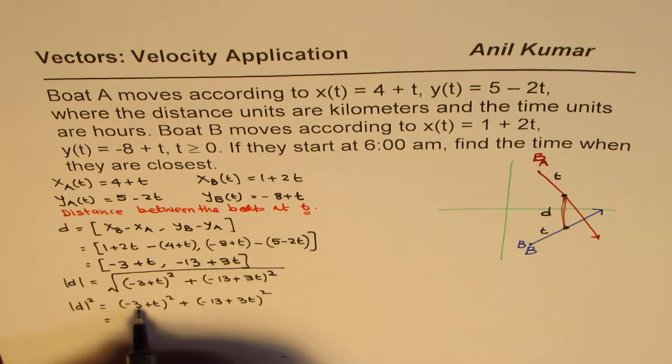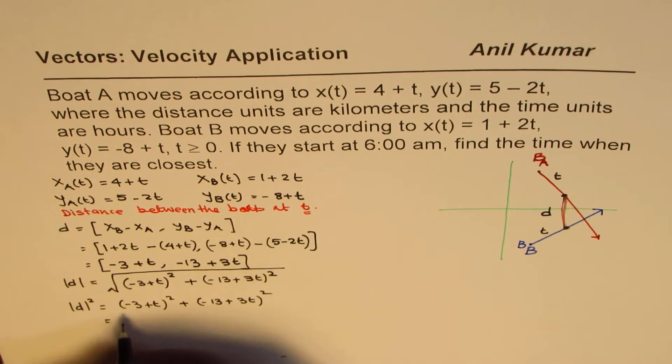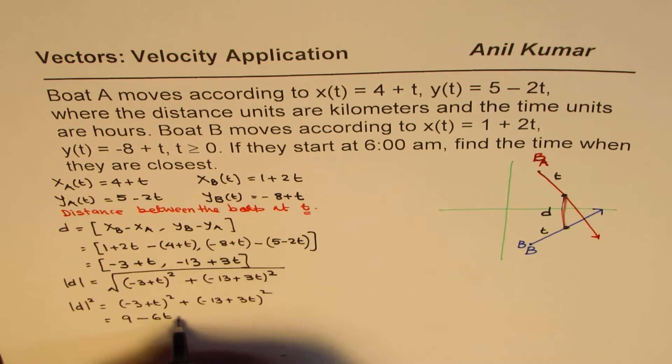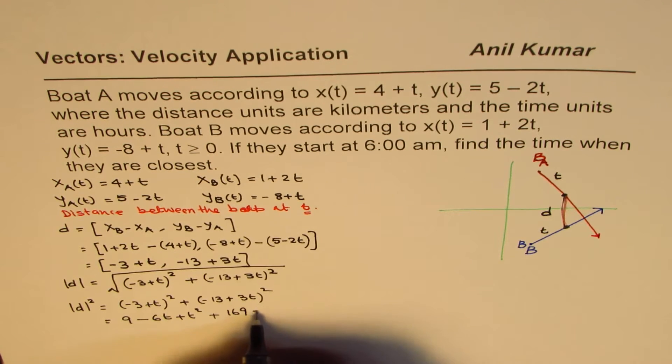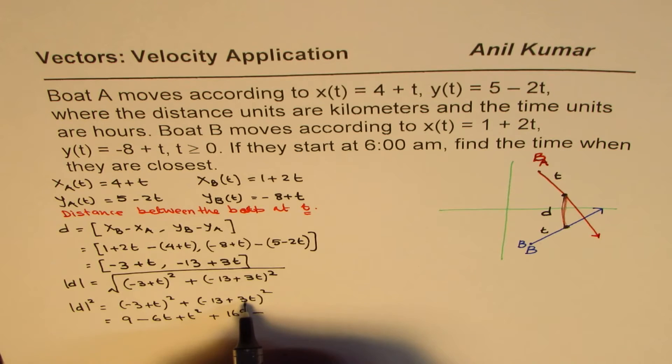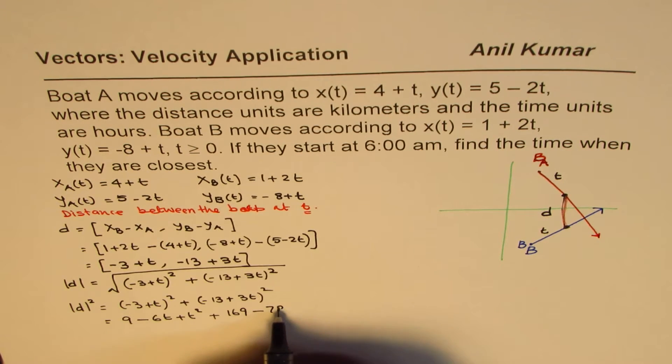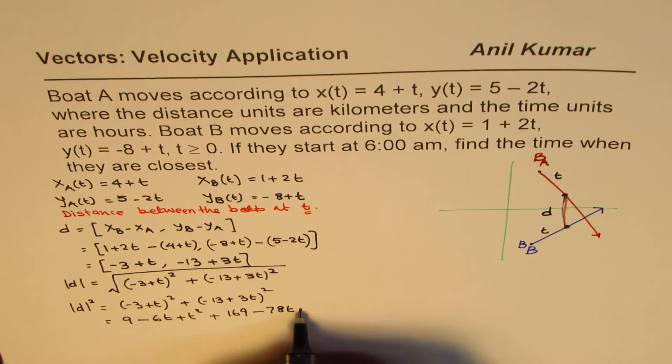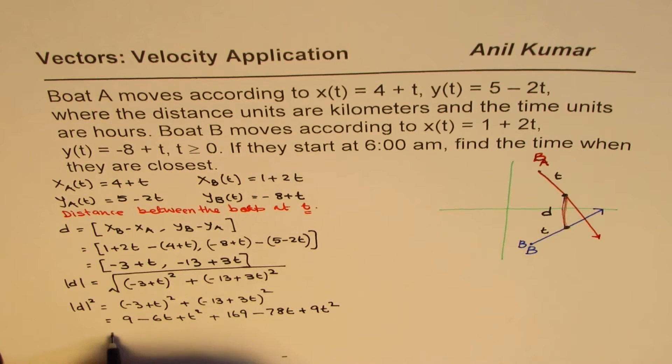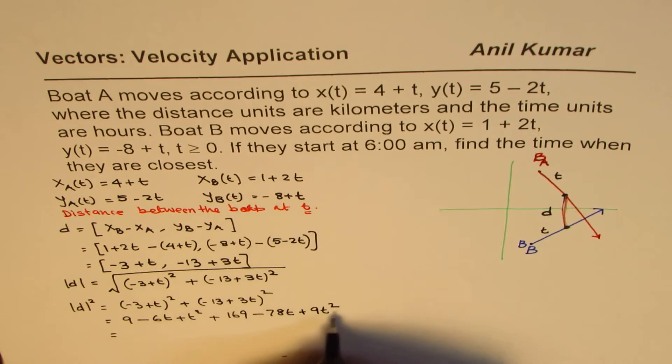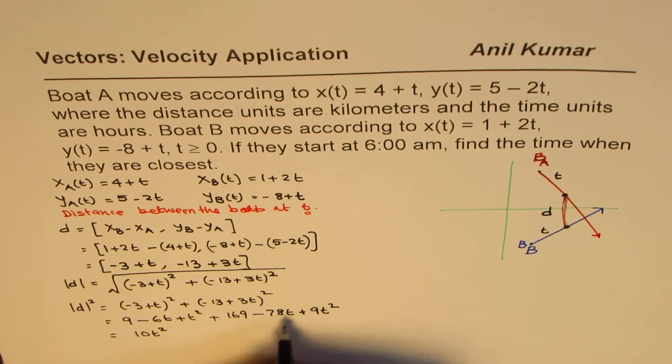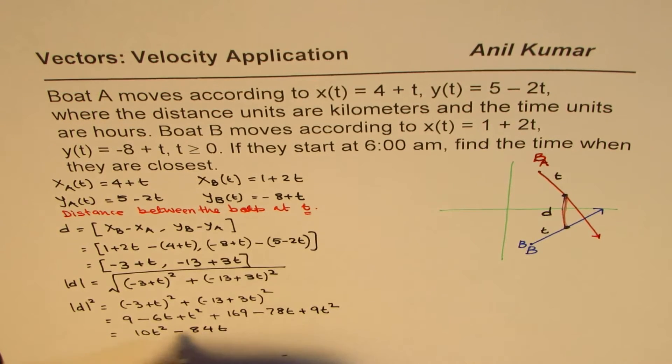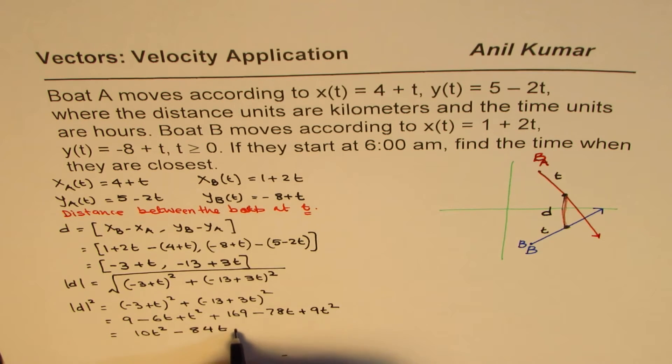Now we need to minimize this distance. If distance is minimum, the square will also be minimum. So we could find minimum square distance. So that will be (-3 + t)² + (-13 + 3t)². Now we can square this, A² minus 2AB plus B². So we get 9 - 6t + t² plus 169 - 78t plus 9t². Let's simplify these. 9t² and t² become 10t², -6t and -78t become -84t, and the constants 9 and 169 give us 178.